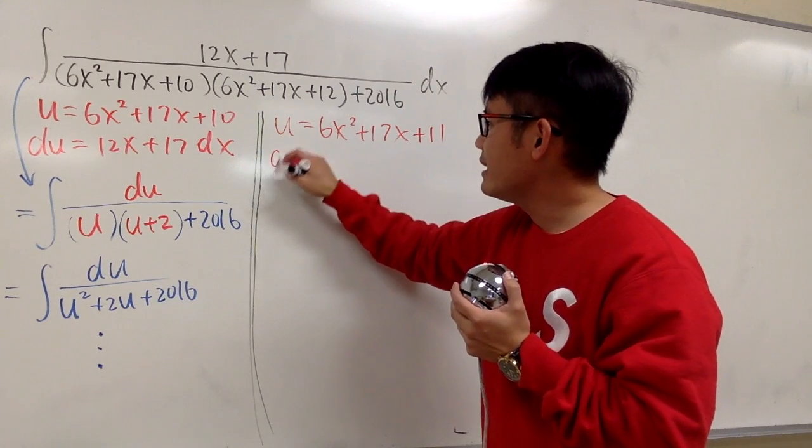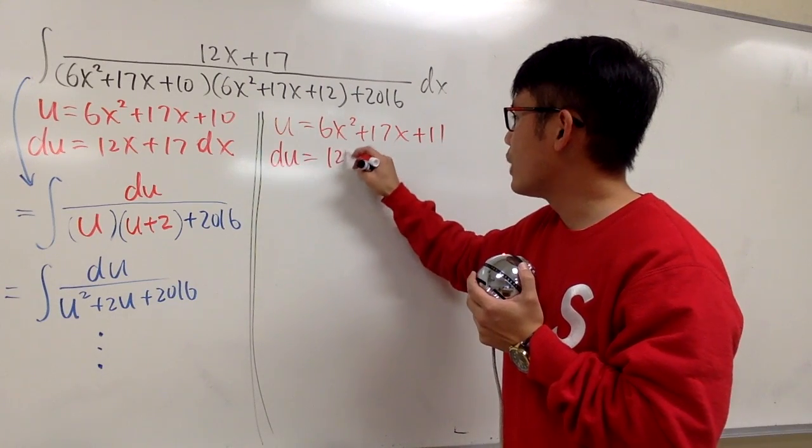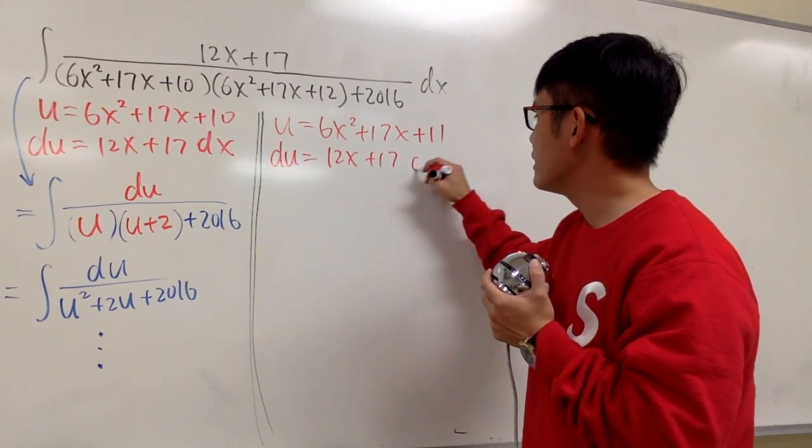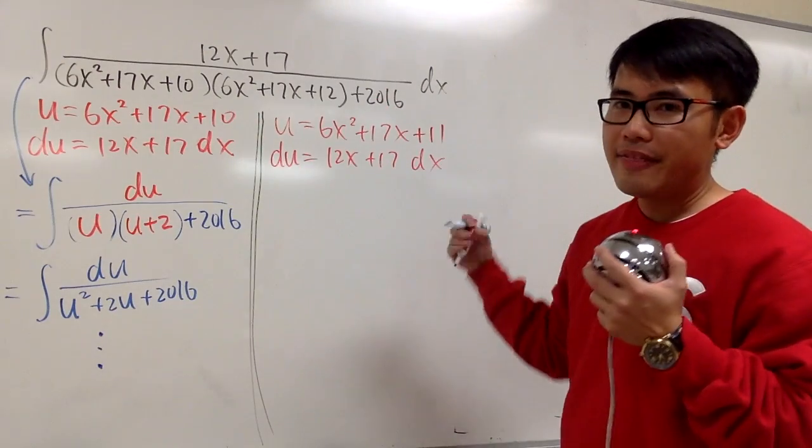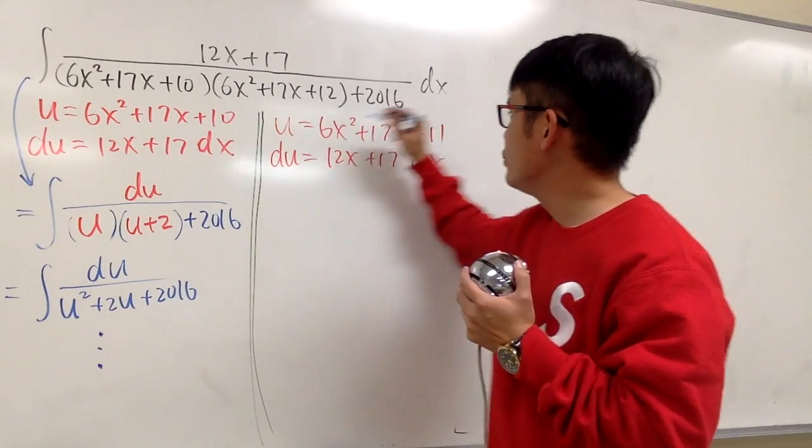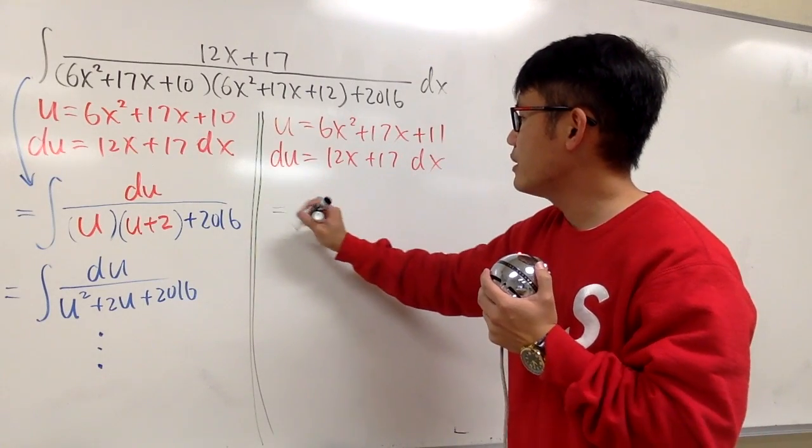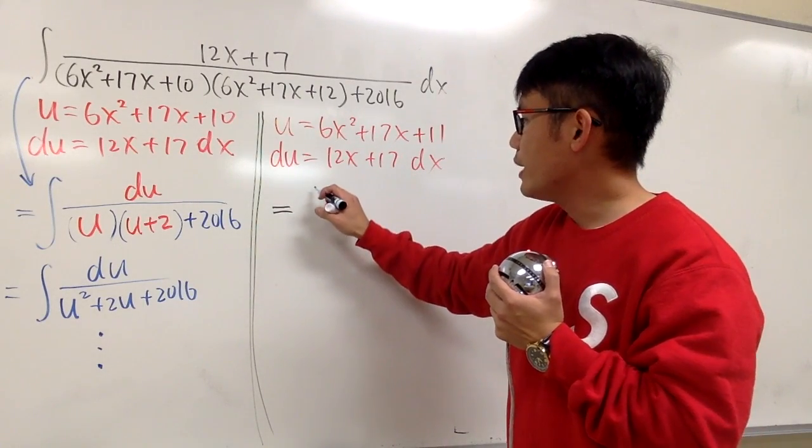So far they match, but I will add 11 right here. Take the middle. You will see, when I differentiate, I still end up with du equals 12x plus 17 dx. So this is still good. That still matches the top. And now, when I take this integral into the u world, I will just write it down here.